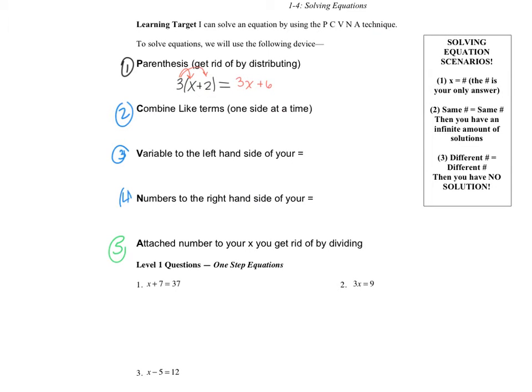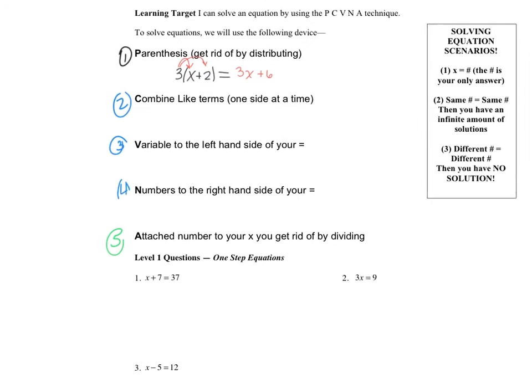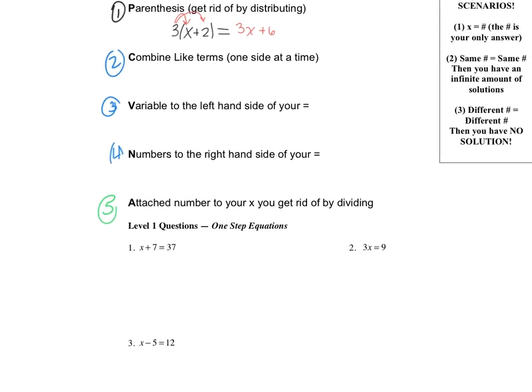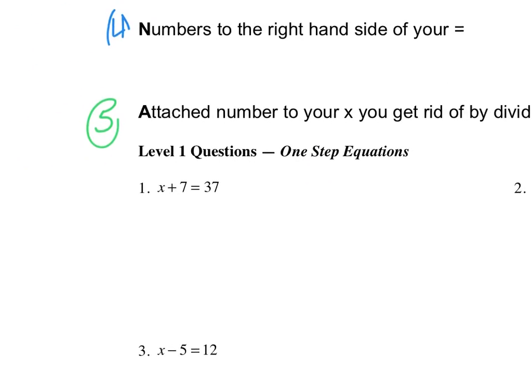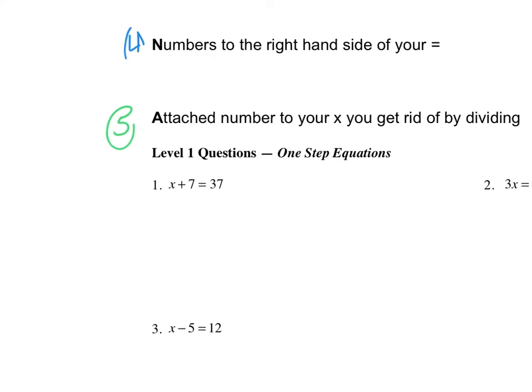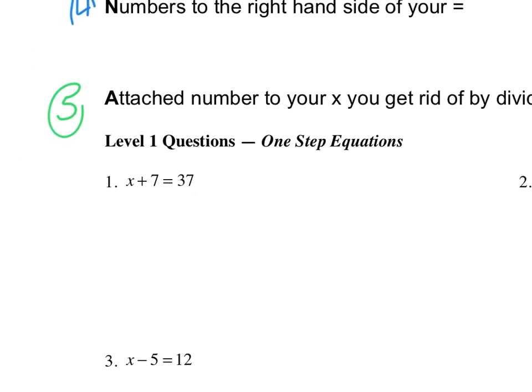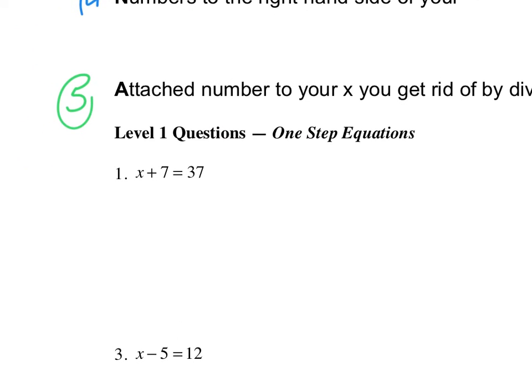So that's our procedure we're going to be using. Make sure you live it, you love it, you laugh it, tattoo it, whatever you need. So we are going to first do level one questions. Level one questions are one-step equations. So we typically start out with the equation, and it's only going to be one step.